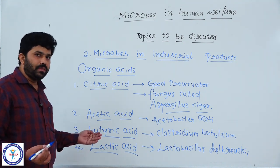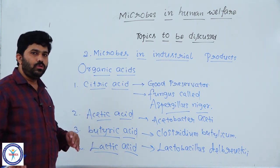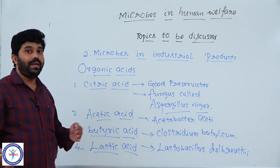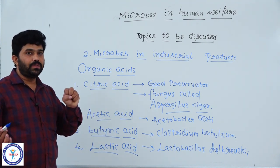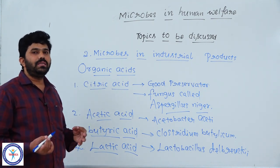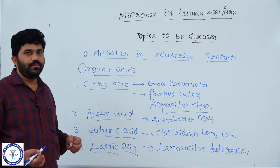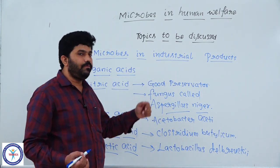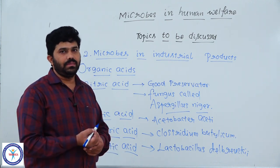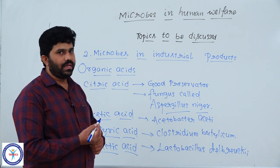Not only for food purposes — some particular organic acids are also used as food additives, paints, adhesive purposes, or packaging purposes. These organic acids are also obtained from different kinds of bacteria and fungal members. These microbes are playing a pivotal role in the production of organic acids.